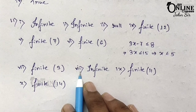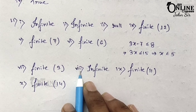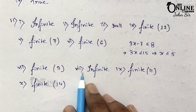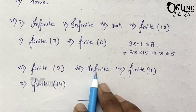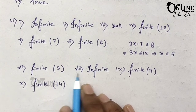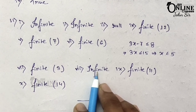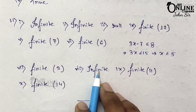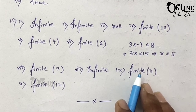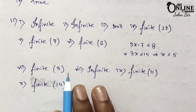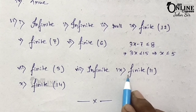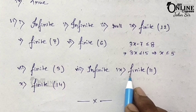Number 8: x = 5n where n belongs to integers and x < 20. Since n can be positive or negative integers, there is no fixed value. So it's an infinite set.